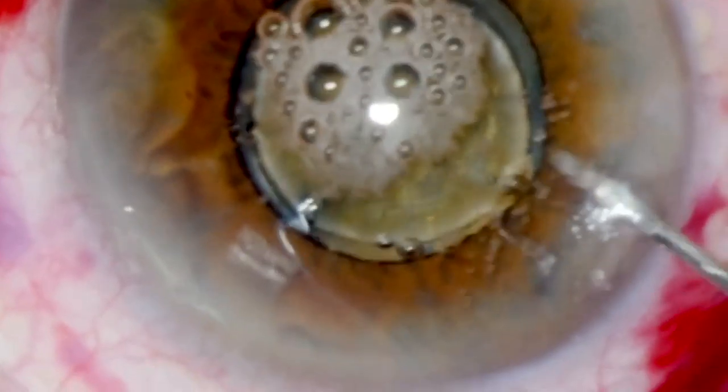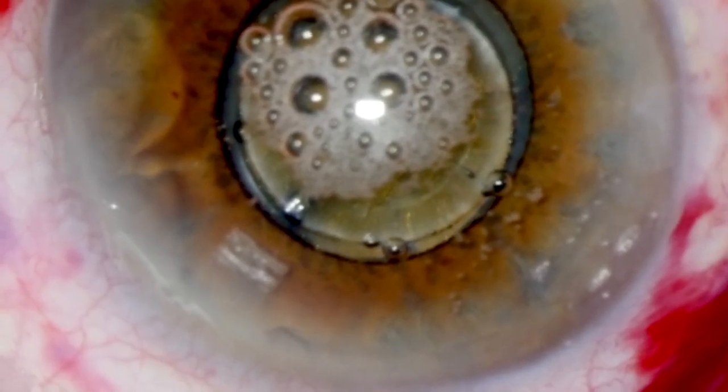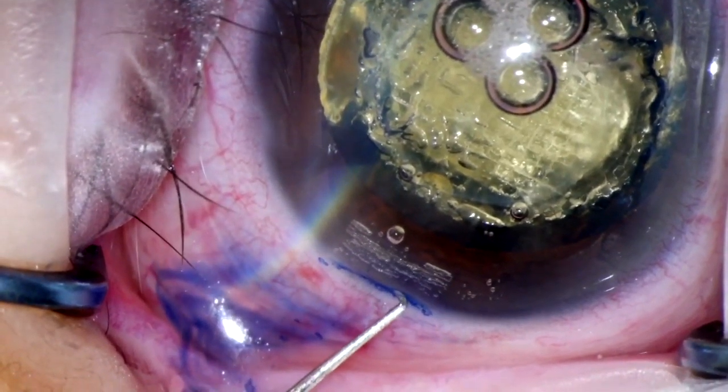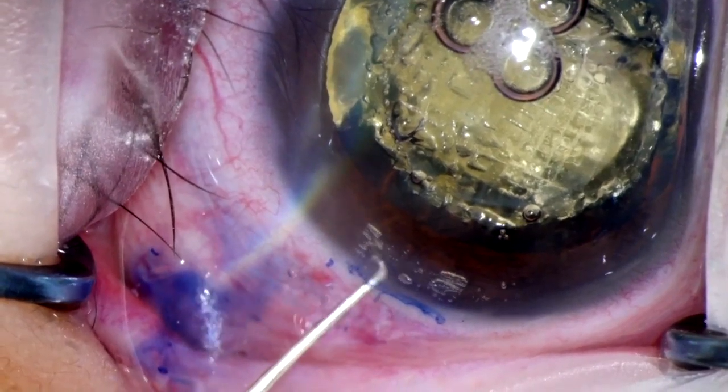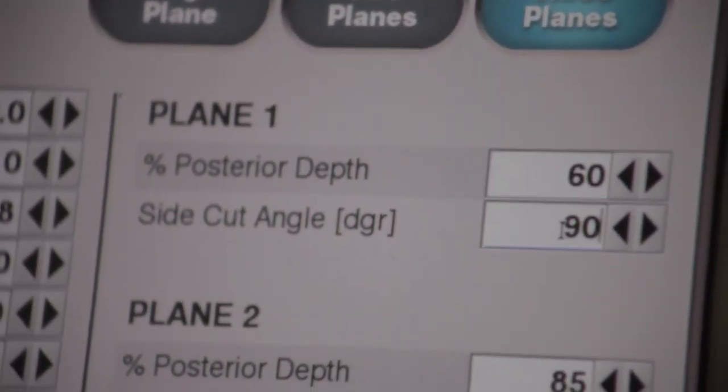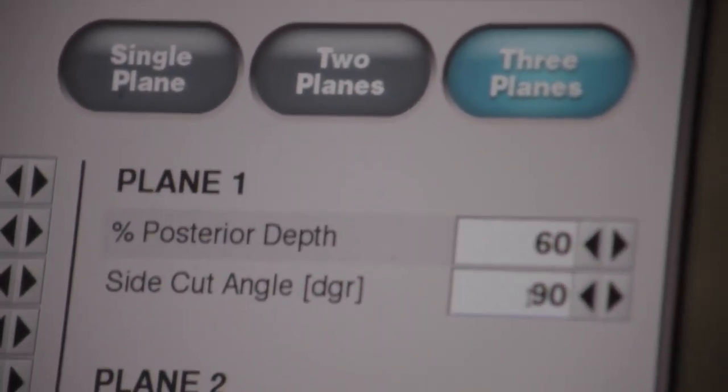The first plane is what we consider the most important plane. Application of the femtosecond laser leads to what may be called a velcro or a zipper effect. This demands the use of blunt instruments to open the incisions. The fitting of a blunt instrument, such as a spatula or a Sinskey hook, into the first, deep plane does allow for fitting into enough space, leading to opening of the tissue. The depth of our first plane is 60%, which makes this easier.